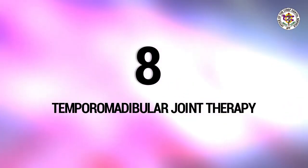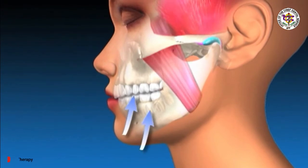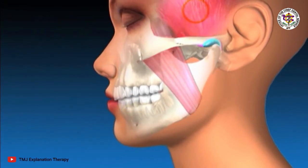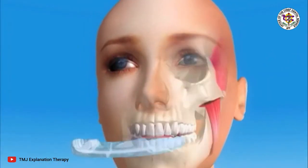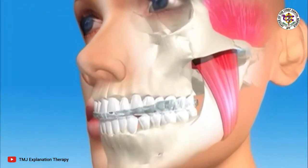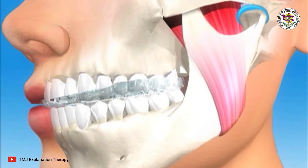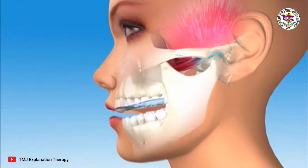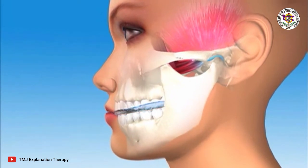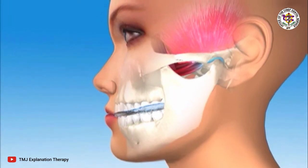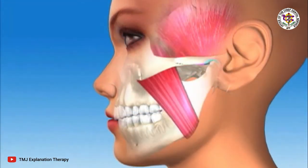Temporomandibular joint therapy: a group of conditions that cause pain in and around the jaw joint and nearby muscles is called TMD, or temporomandibular joint disorder. Along with other non-surgical treatments, medication options may help relieve the pain associated with TMJ disorders. Non-drug therapies may also be done, including use of oral splints or mouth guards, occlusal appliances, and home care instructions for physical exercises to stretch and strengthen jaw muscles.